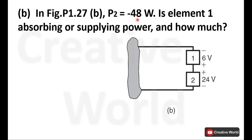Now proceed towards Part B. Element 2 is supplying power — 48 watts — and we know this just because of the minus sign with the power value. So the power of element 2 is 48 watts and it is supplying 48 watts. Now in the same manner, we have to calculate the power of element 1, and we only have voltage across this element.